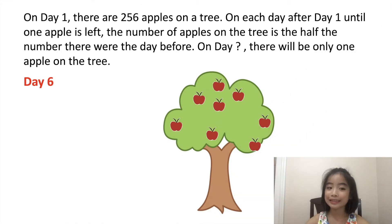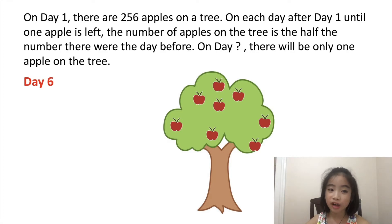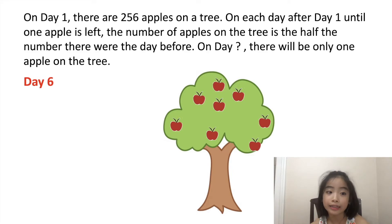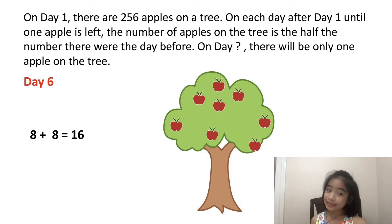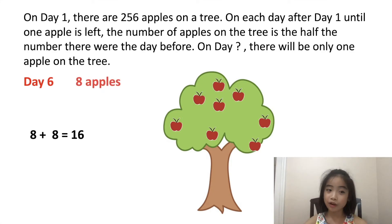Now let's figure out how many apples there are on day six. We know that on day five there are 16 apples. So on day six, the number of apples is half the number on day five, which is eight. I know this because eight plus eight equals 16. So on day six, there are eight apples.